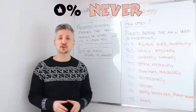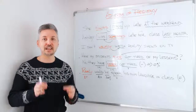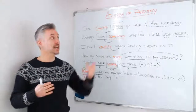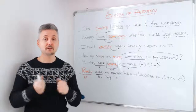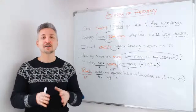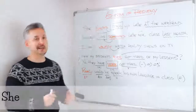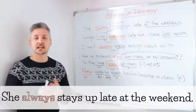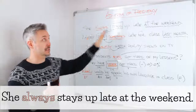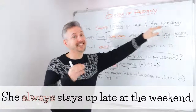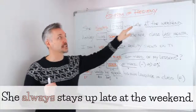Now we're back with the adverbs of frequency. We use adverbs of frequency, usually but not always, with the present simple. For example: "She always stays up late at the weekend." I've also underlined "at the weekend" because it's a time expression. We place the time expression at the end of the sentence or at the beginning — it's the same thing. "At the weekend, she always stays up late" works equally well.